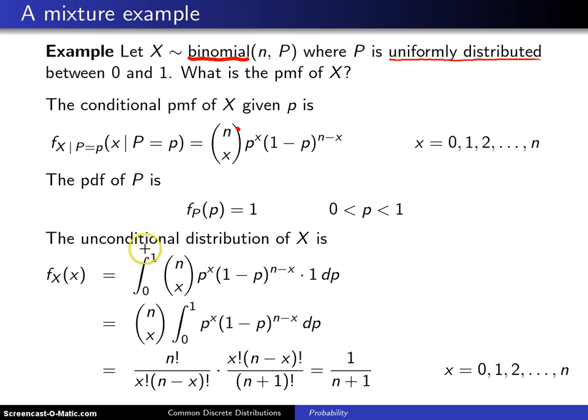Now from this, the unconditional distribution of X will be f sub X of x is the integral from 0 to 1. We're going to integrate out p of the conditional distribution, that gets put right here, multiplied by the probability density function of p, that gets put right here.